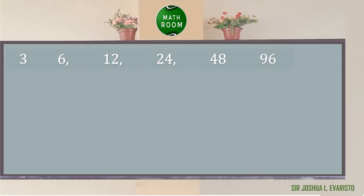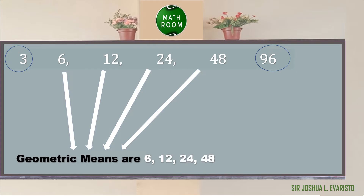Another example is 3, 6, 12, 24, 48, 96. The two non-consecutive terms are 3 and 96. The terms in between these two non-consecutive terms are the geometric means, which are 6, 12, 24, and 48.